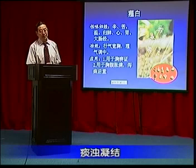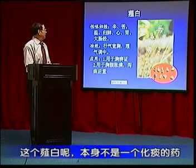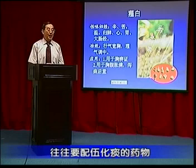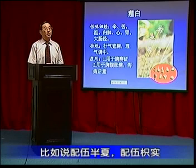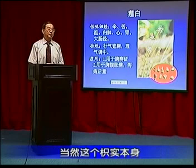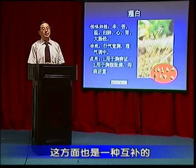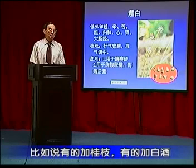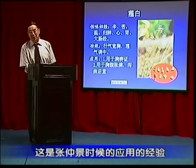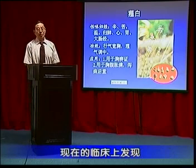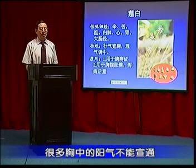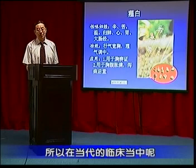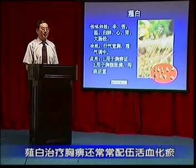由于胸中的阳气痹阻、痰浊凝解，薤白本身不是一个化痰的药，所以治疗这样的胸痹往往要配伍化痰的药物，比如配伍半夏、瓜蒌（紫石），当然瓜蒌本身也有行气宽胸的作用。为了更加增强宣通阳气的作用，有的加桂枝，有的加白酒，这是张仲景时候的应用经验。现代临床发现，很多胸中阳气不能宣通，除了痰浊凝滞以外，还有瘀血阻滞，所以当代临床中薤白治疗胸痹，还常常配伍活血化瘀药。